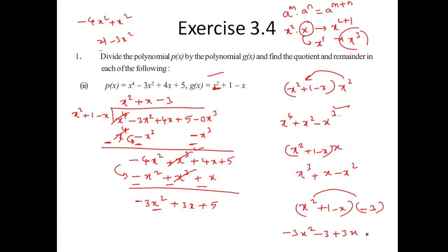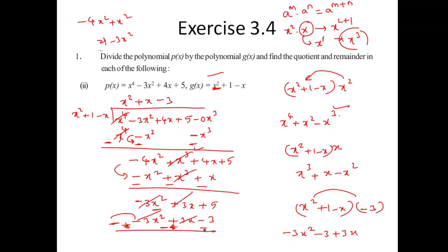Substituting and multiplying through, we get minus 3X² plus 3X minus 3. Adding up, then subtracting — everything cancels out step by step. Eventually the remainder is 8. So R of X equals 8, and Q of X equals X² plus X minus 3.